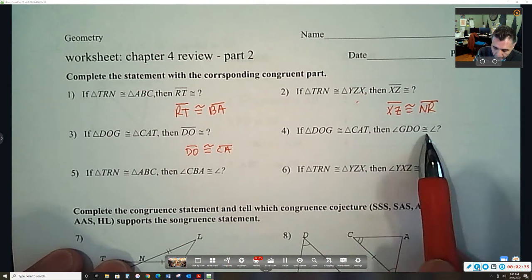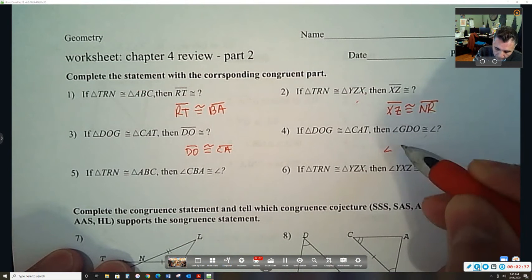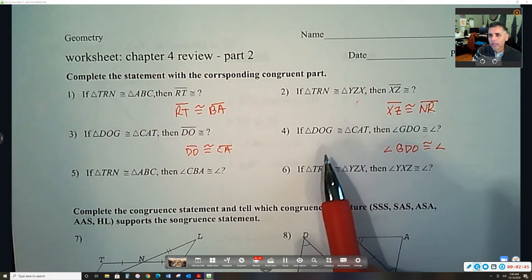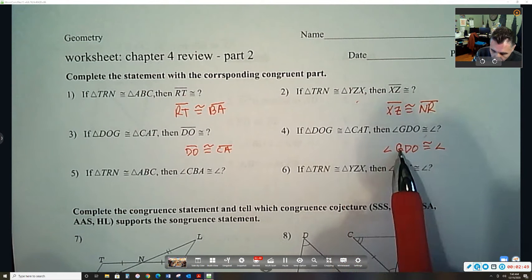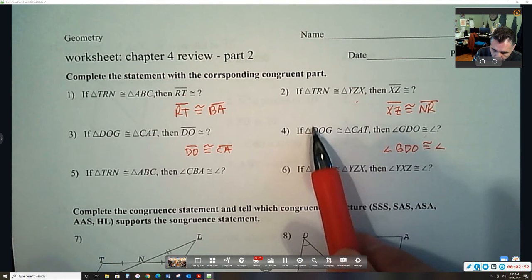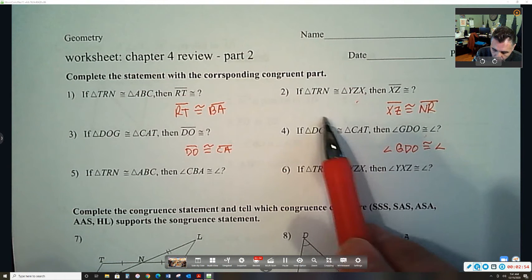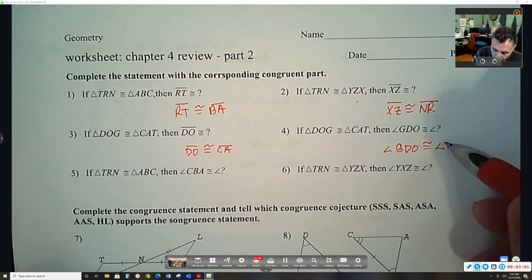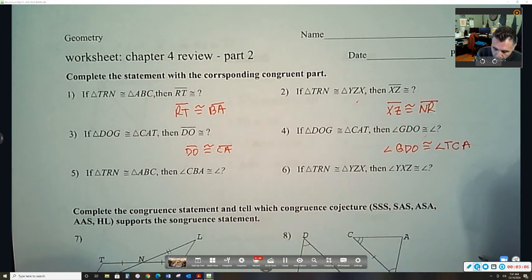And then if we continue with this, we want to find angle GDO is congruent to which angle. So we just got to find the corresponding angle. And again, just go in order of the letters. So GDO, it goes G the third letter, and then DO. So it goes 3, 1, 2. So this should be the last letter. And then back to the front, and then TA. TCA. Okay.